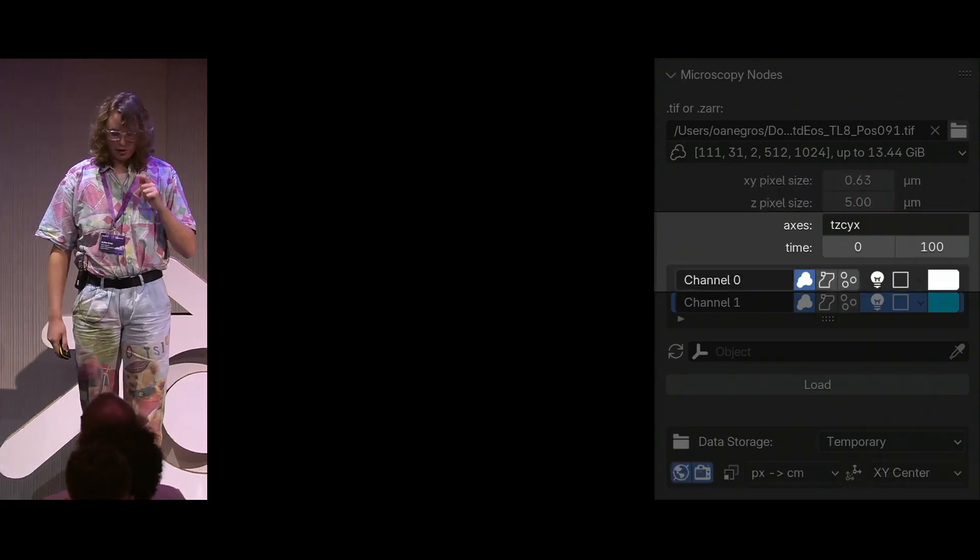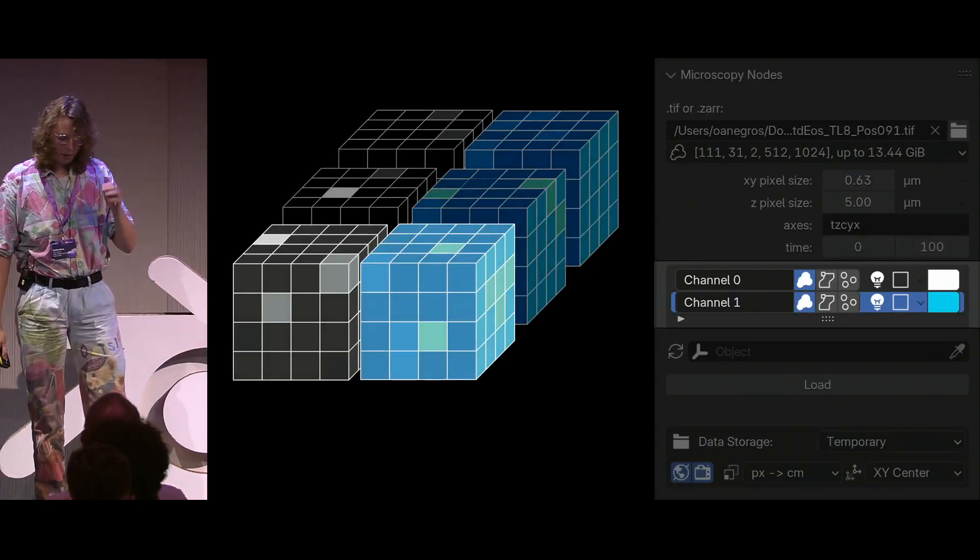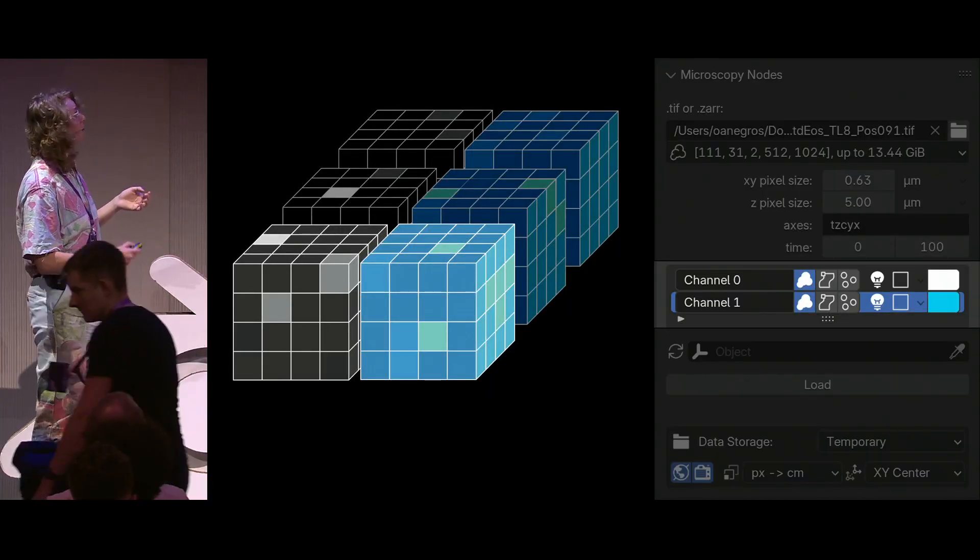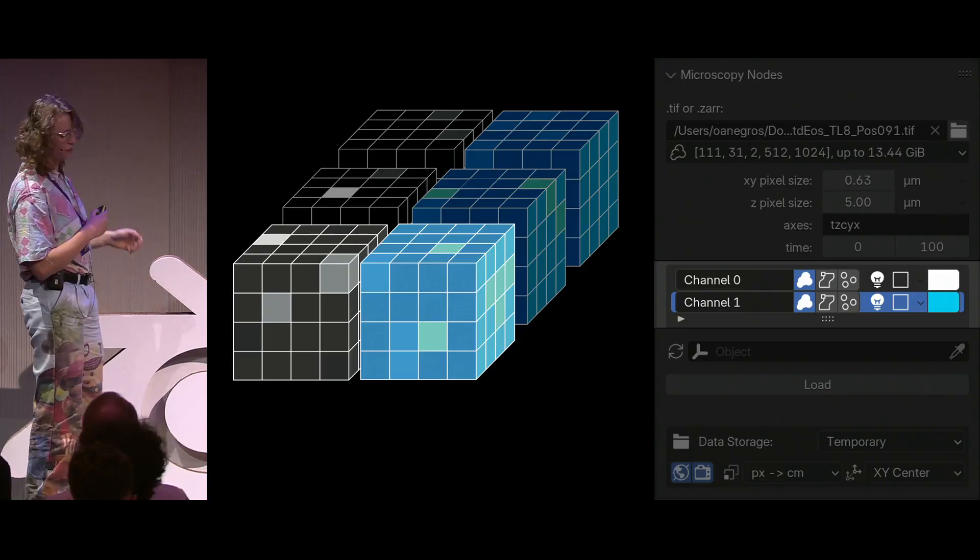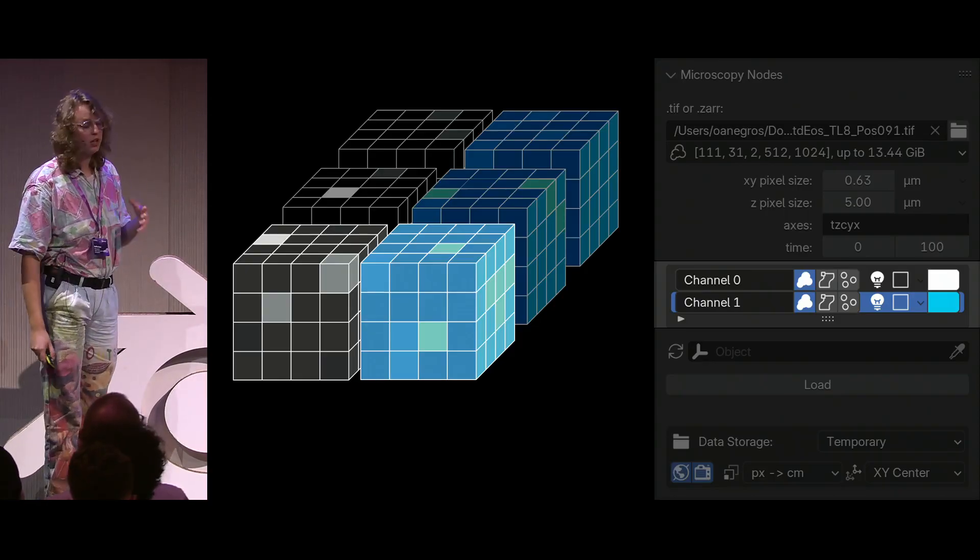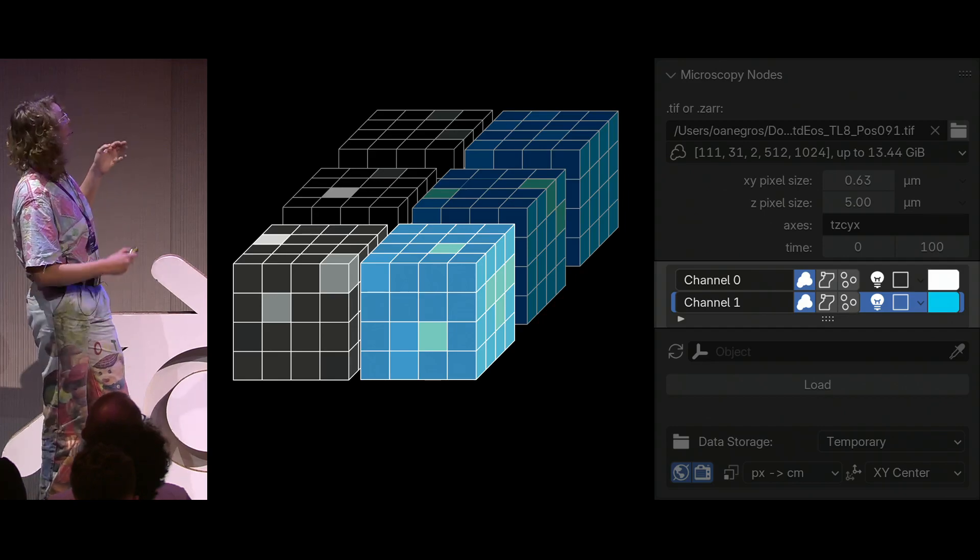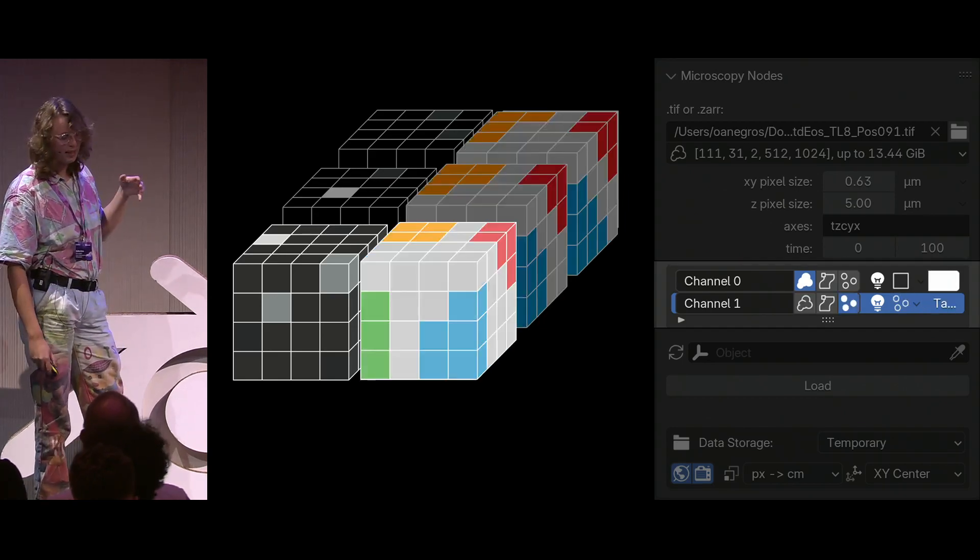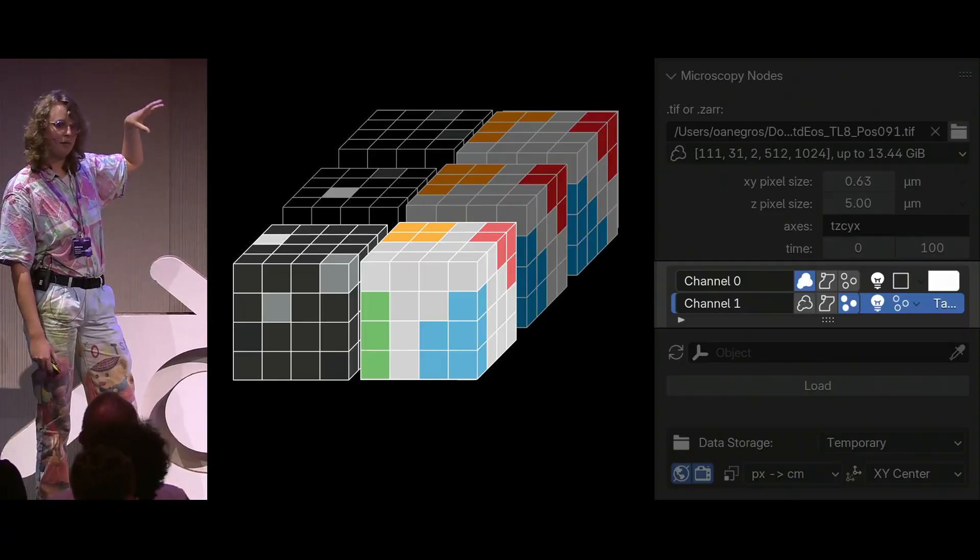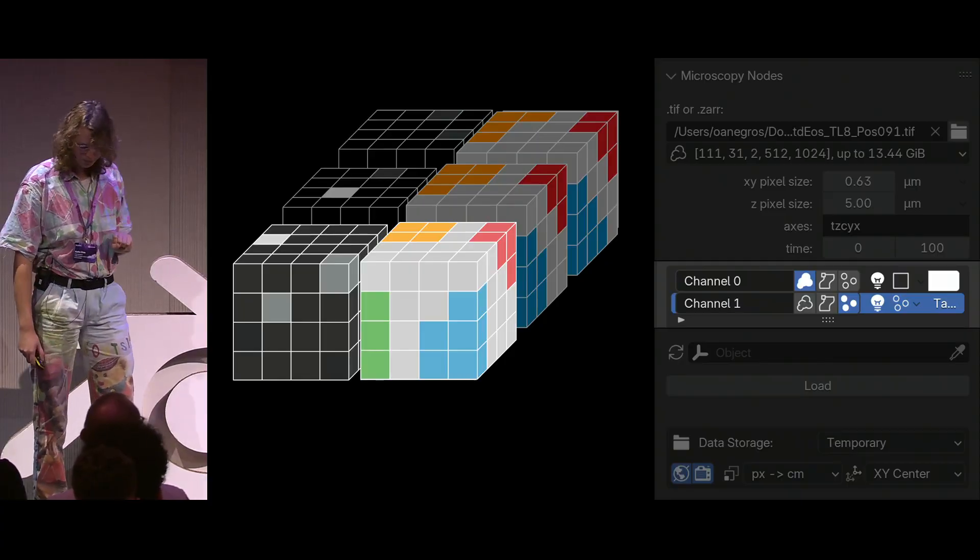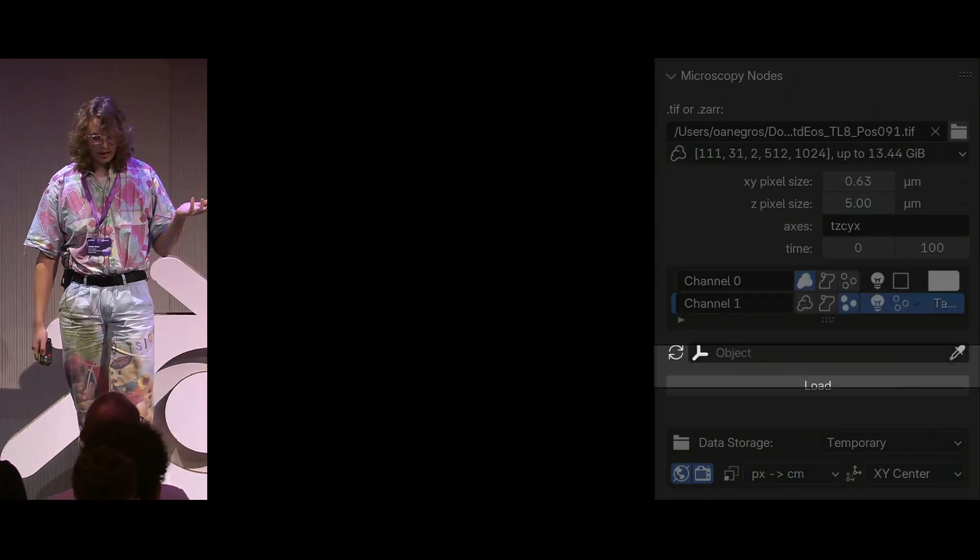And then there's the last part, which is the channel interface, where you can select here, for example, which colors each of your channel shall be, but you can also select how to visualize them. It can be as a volume, or as a surface, or as a label mask, where the label mask will take these separate regions and make meshes for each of them. And then you can load your data.